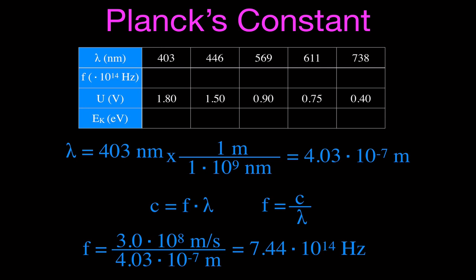I'm going to put that right there on our table. I'm going to do that four more times — just take the nanometers, divide by a billion to get the wavelength in meters (for example, 4.46×10^-7), then insert it into the equation and divide to get your frequency. You should get the following four other frequencies. It's good practice to work those out. So now we have our frequencies from our corresponding wavelengths of light in nanometers.